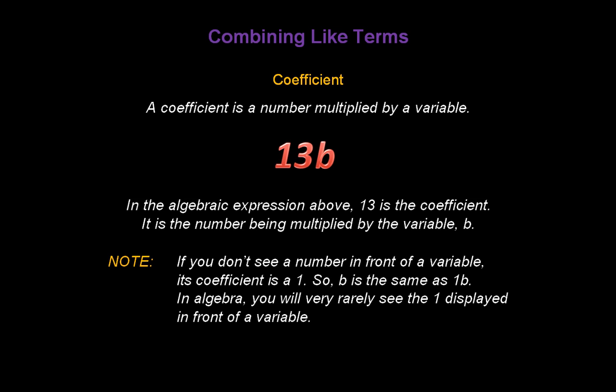Now please note, if you don't see a number in front of a variable, its coefficient is always a 1. So b, written by itself, is the same as 1b. In algebra, you will very rarely see this 1 displayed in front of a variable.